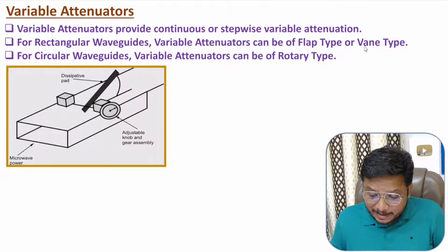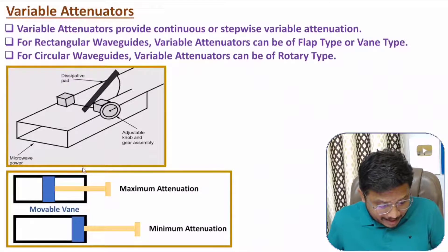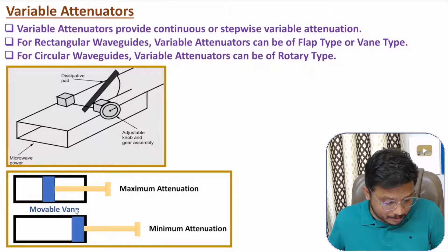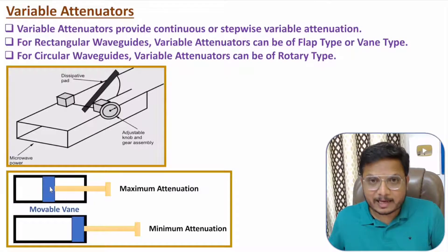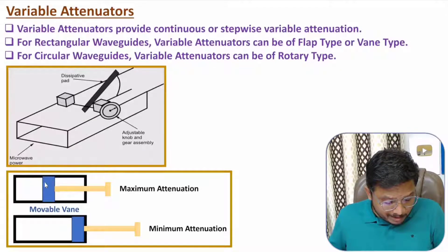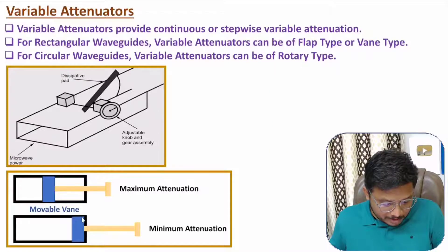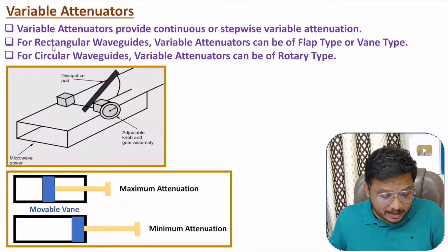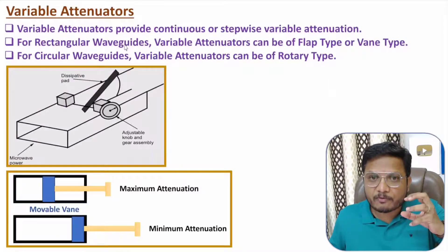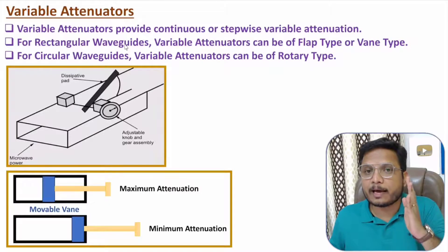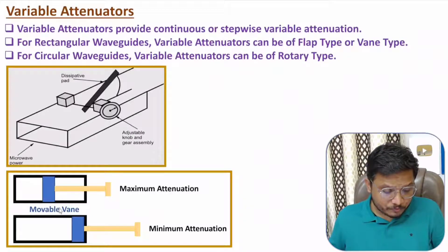The second type for rectangular waveguides is the vane type variable attenuator. Here, we have a movable vane — a dielectric material — controlled by a screw or movable knob. When the movable vane is at the center of the waveguide, we have maximum attenuation. When it is moved to the side, we have minimum attenuation. By changing the position of the vane, we can change the attenuation level.